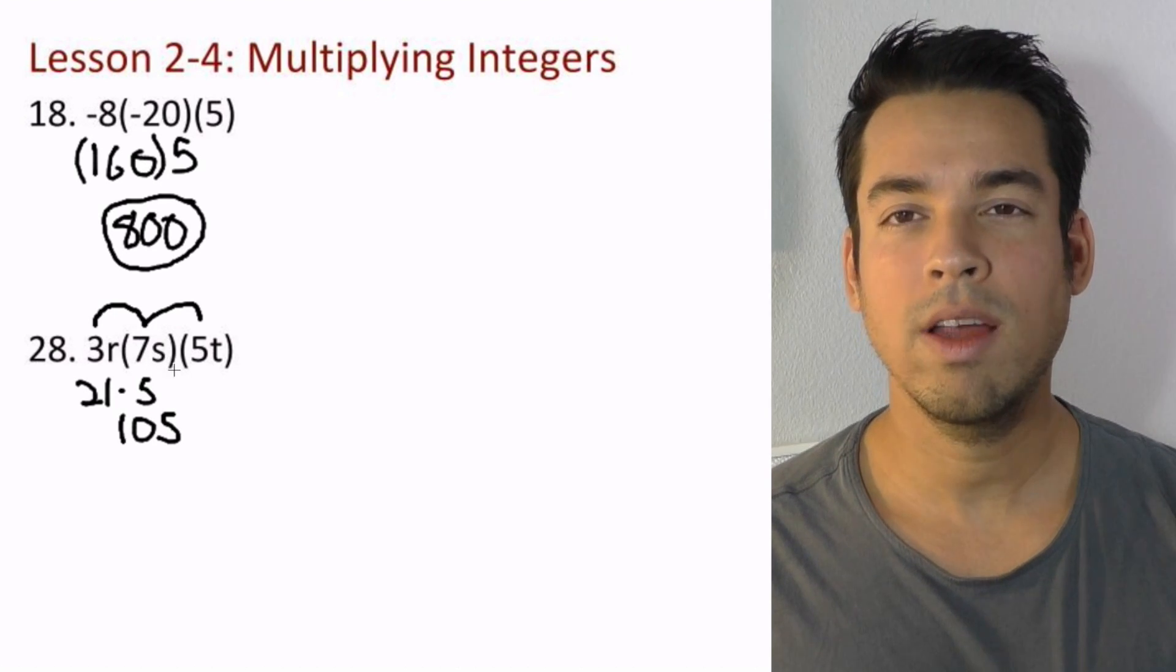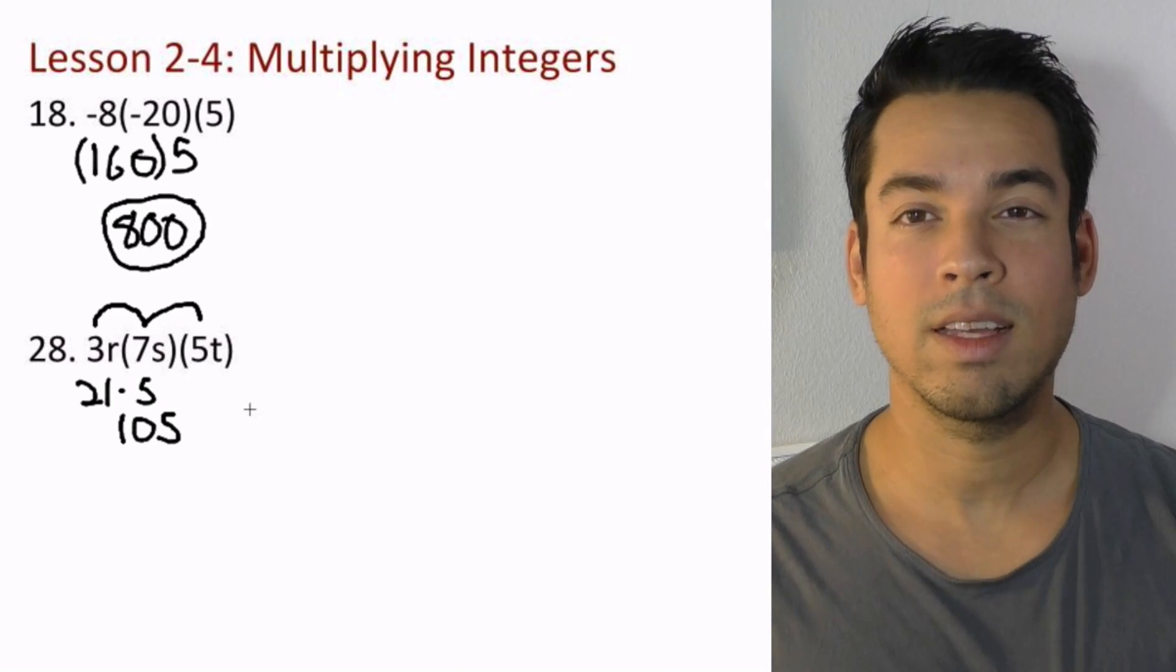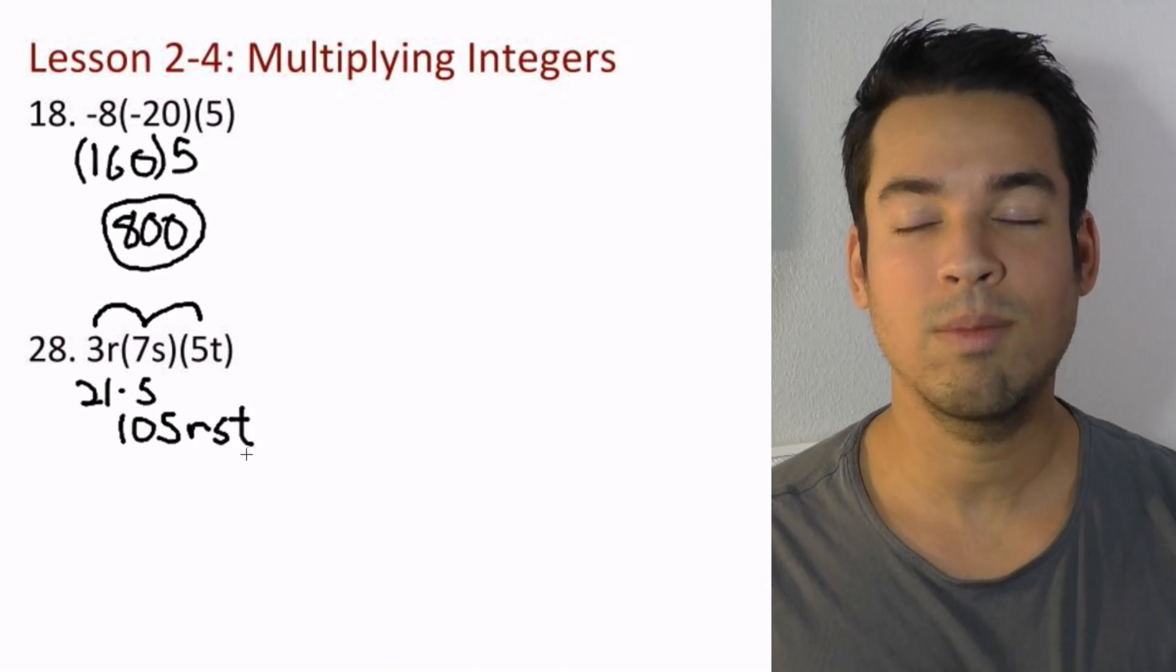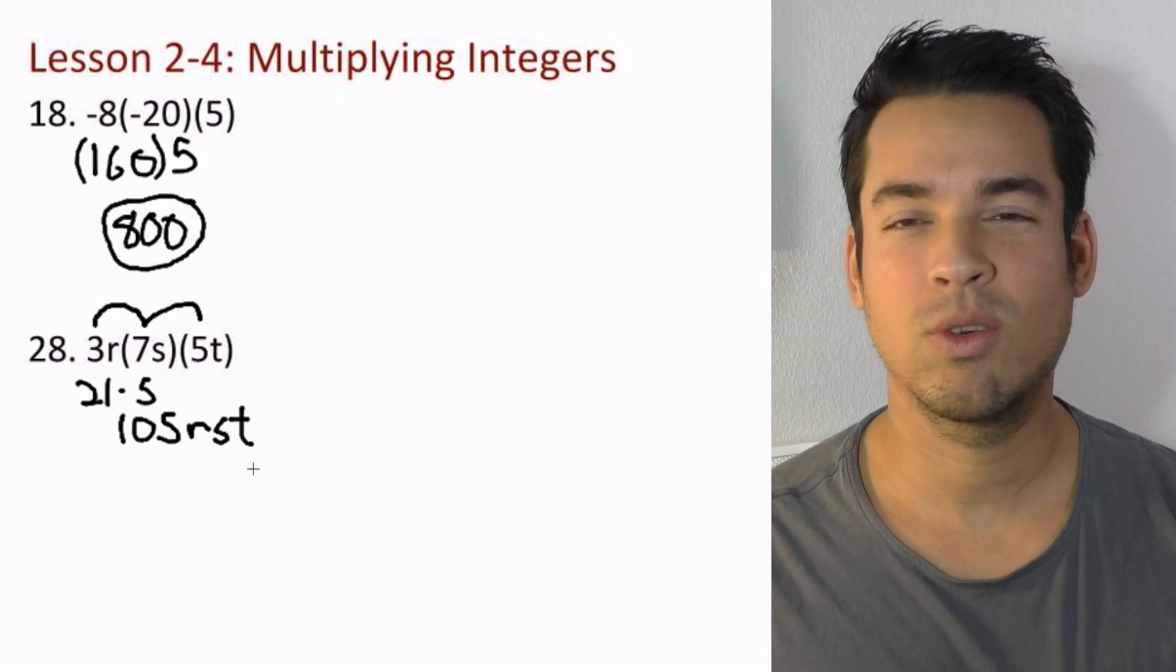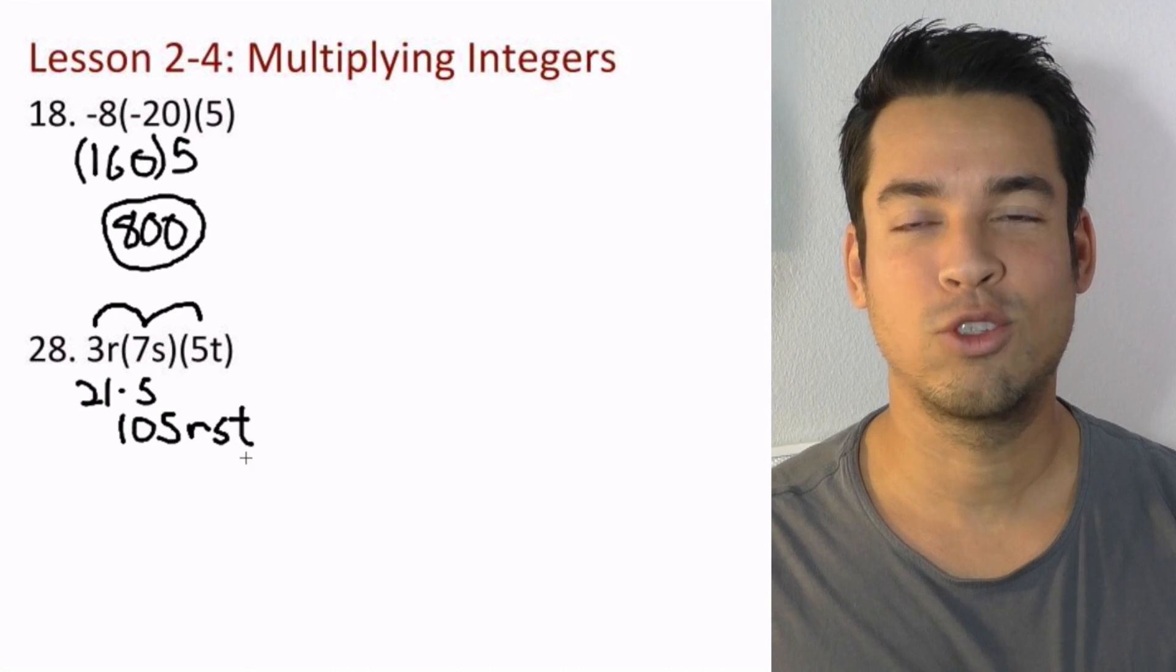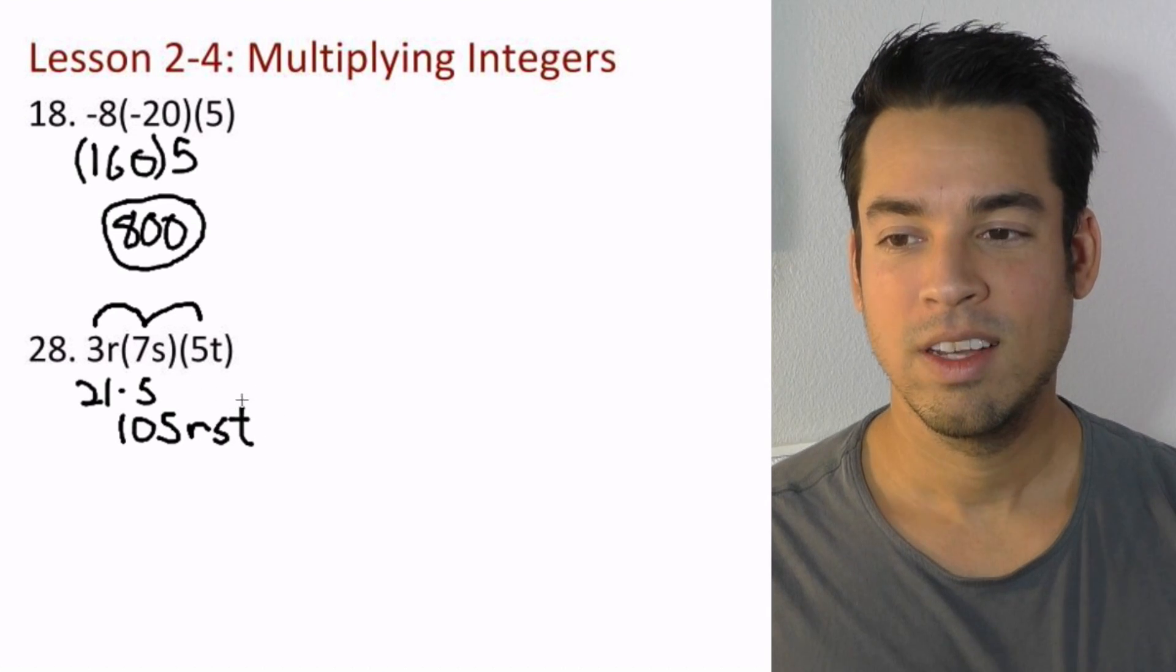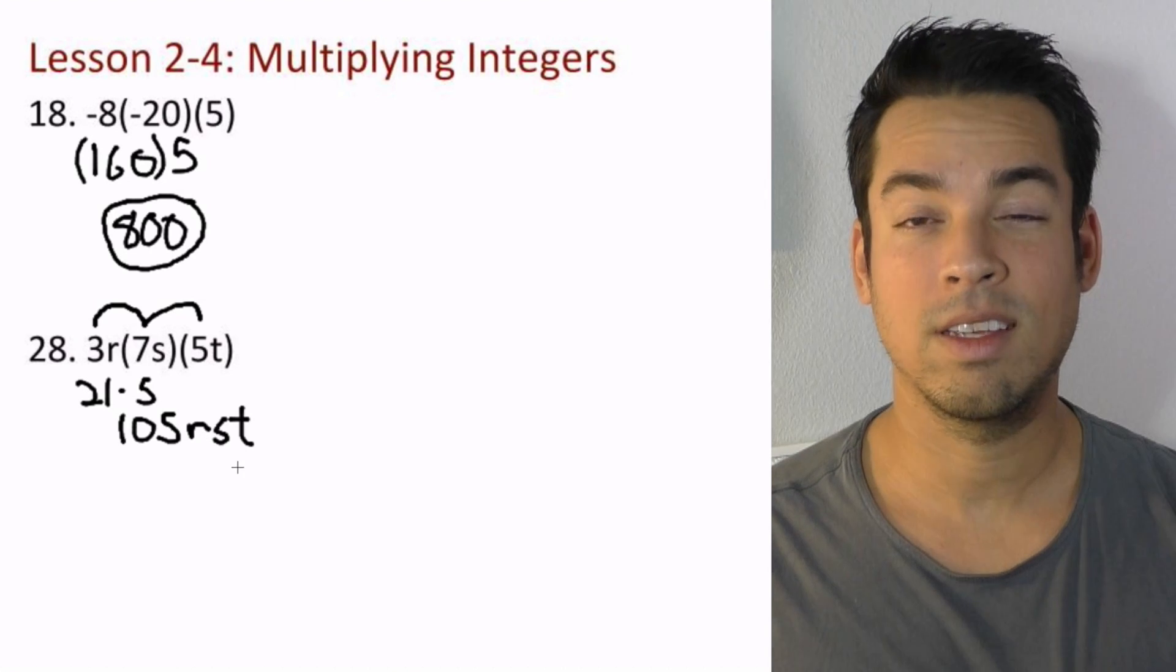What happens to these variables r, s, and t? They don't combine, they're not like terms. They just kind of sit there, just like different fruits or different objects. They don't merge—apples and oranges don't merge into one super fruit. They just stay separate: rst. 105rst is your final answer.